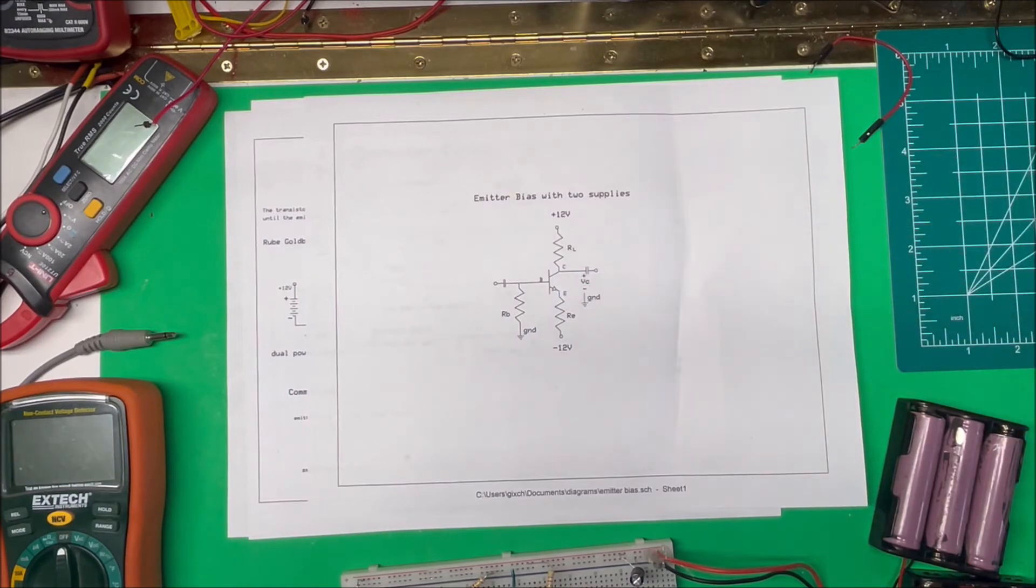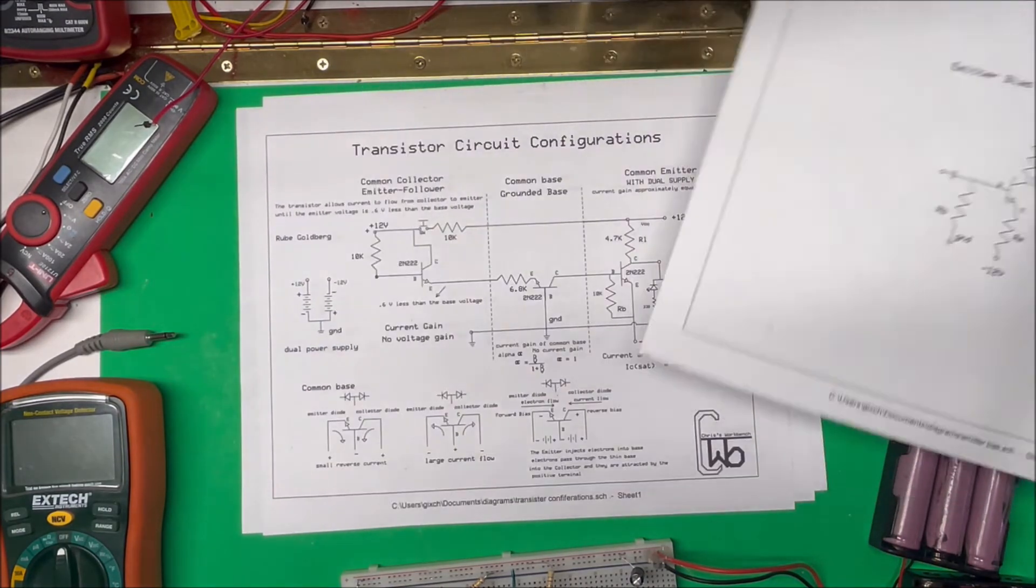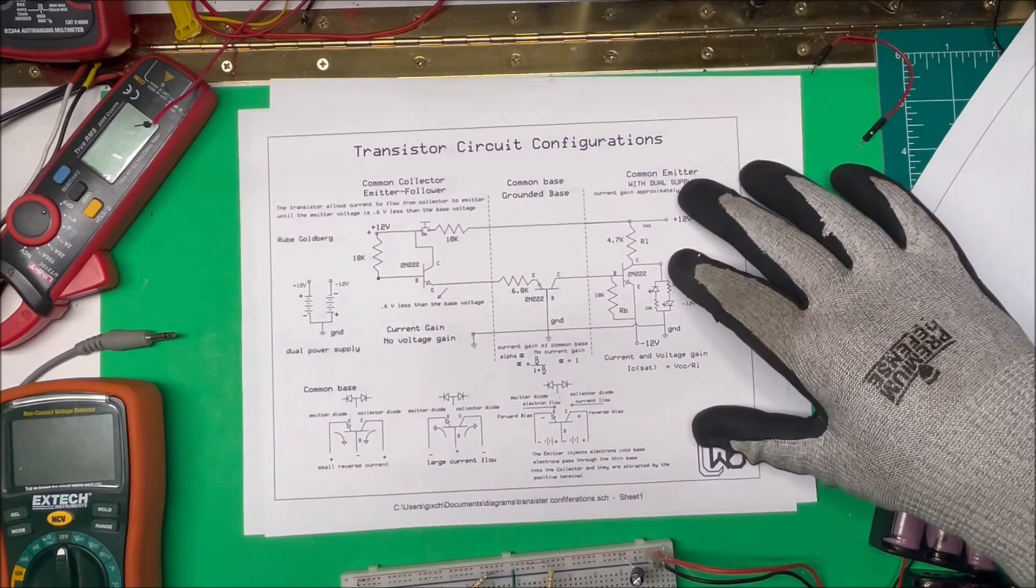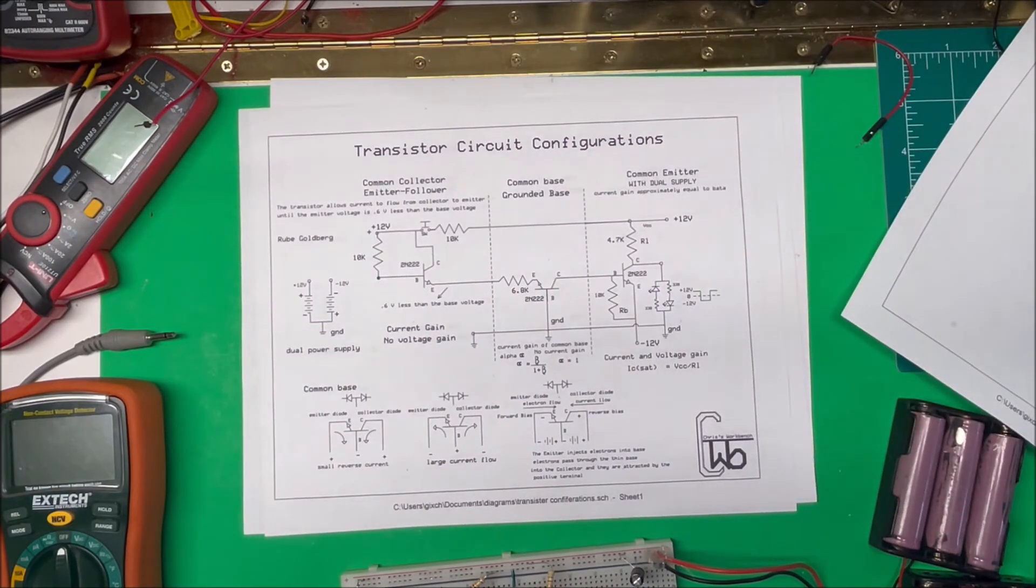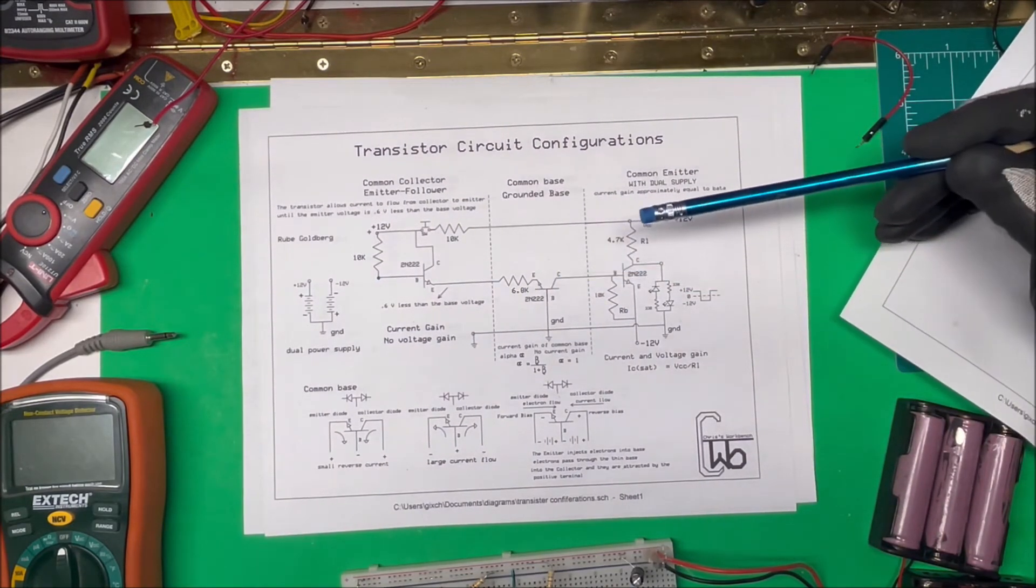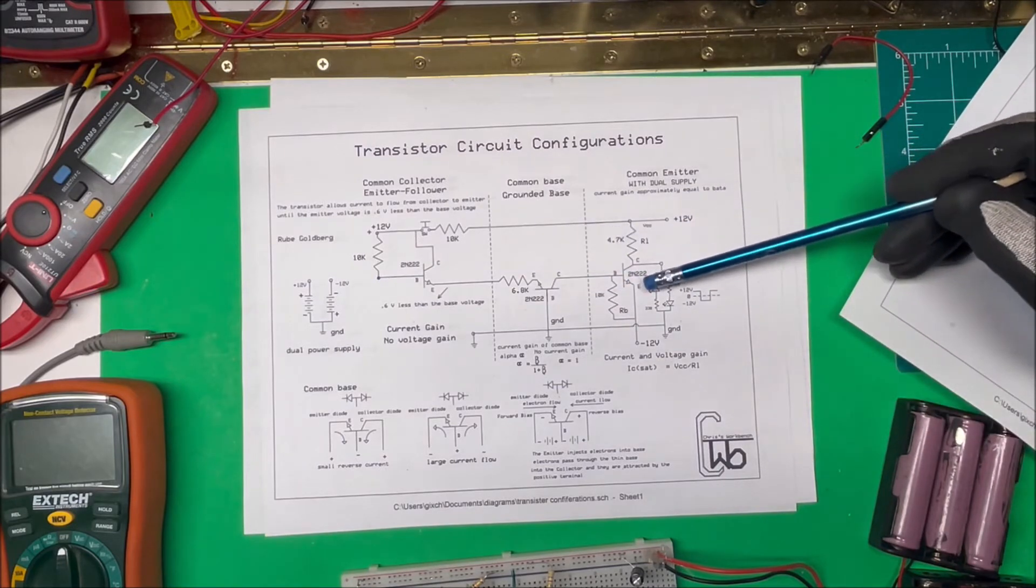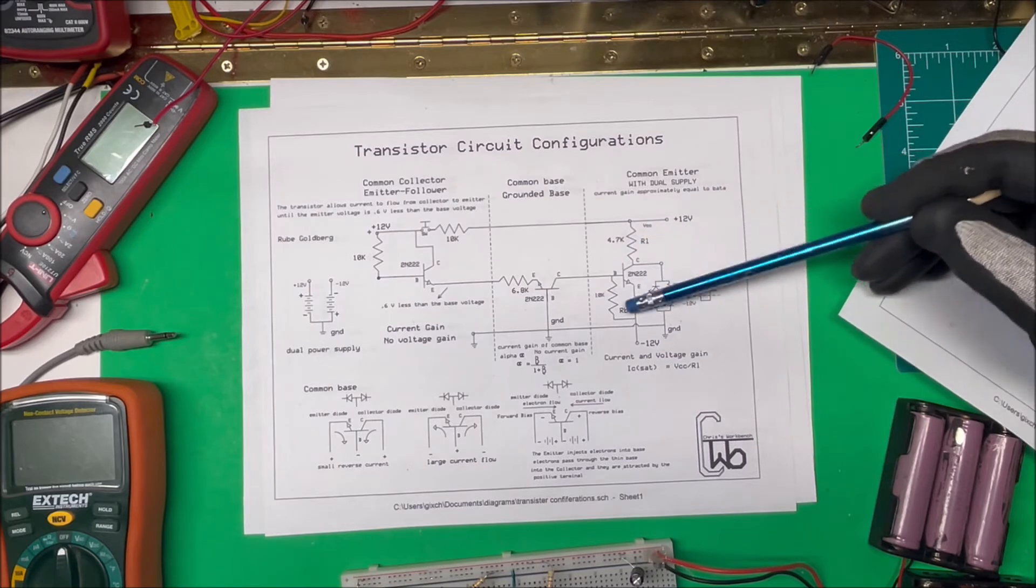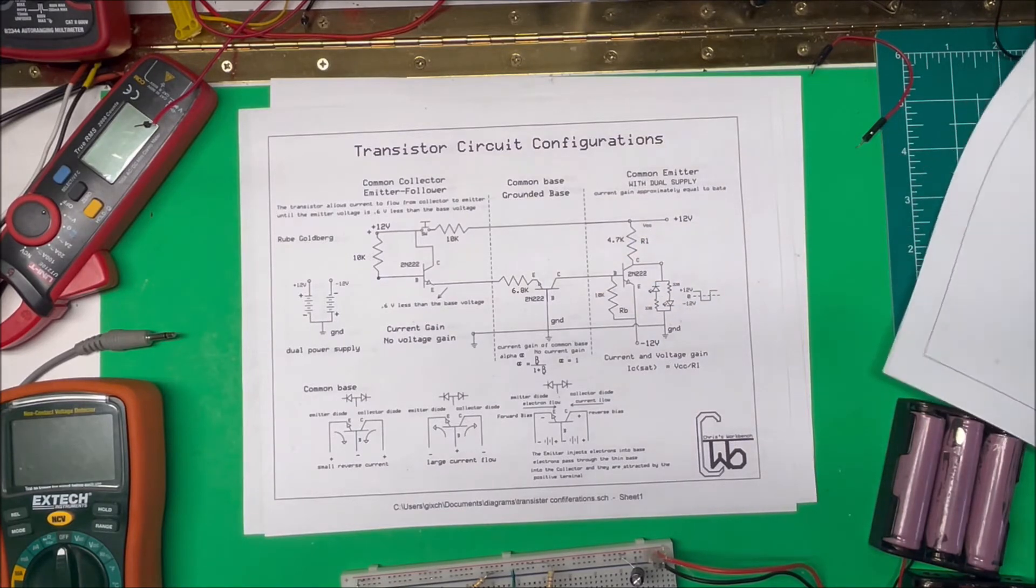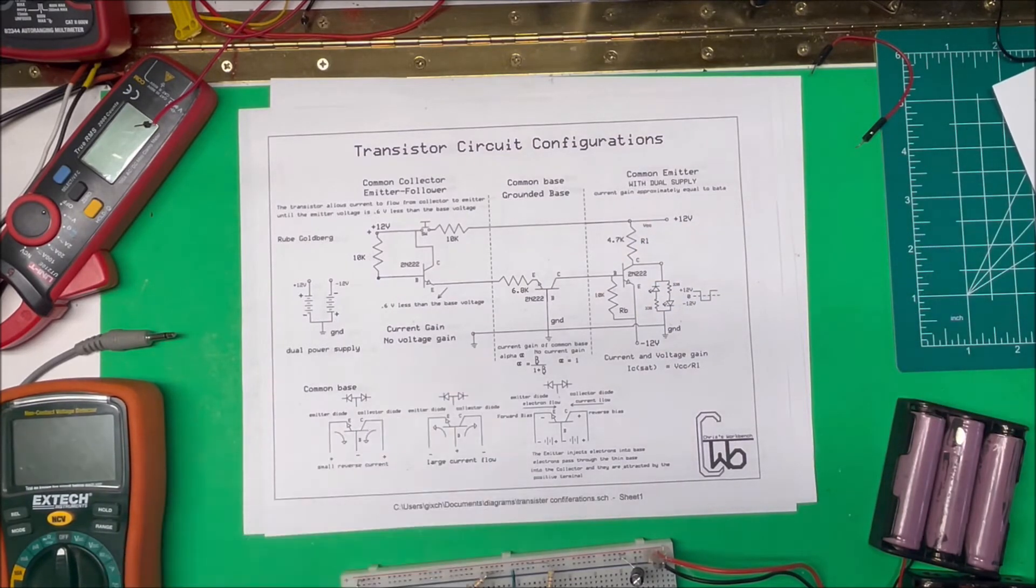And you would take your base here to ground, and then you'd get your signal over on this side here. So this is normally how you'd run an emitter biased with two supplies. But I'm doing a little differently so I could get the common base here to work right. But I think I've got all three in there and we'll actually see how it works.